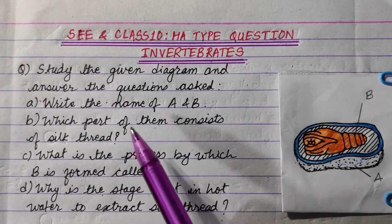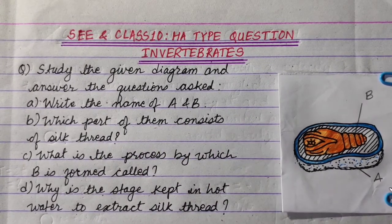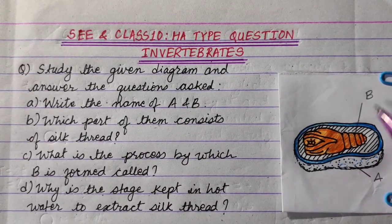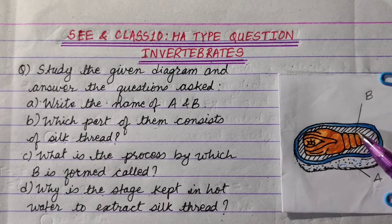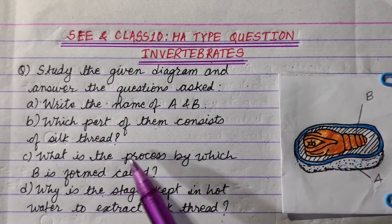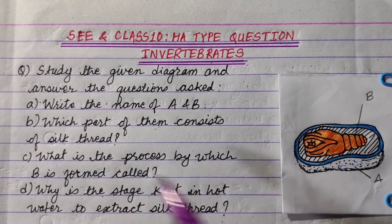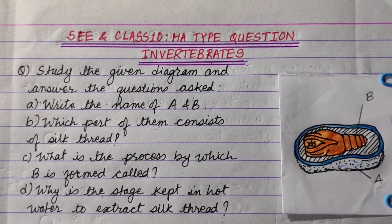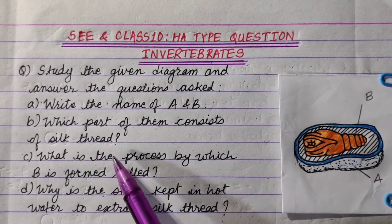The first question is: write the name of A and B. We have to name A and B. The second part asks which part of them consists of silk thread — this is B, which is silk thread.